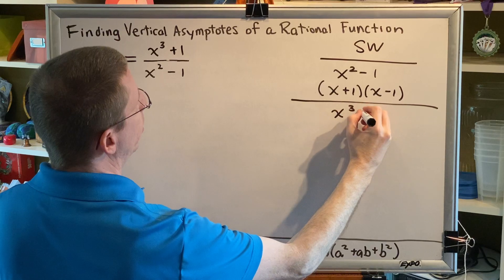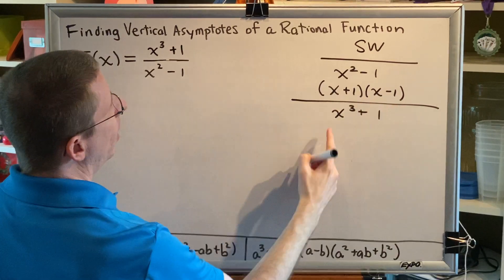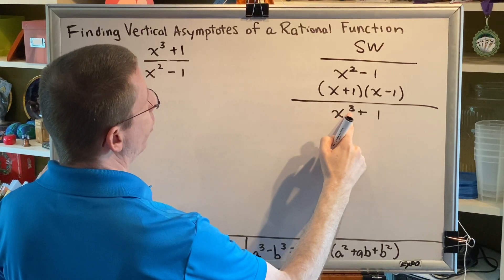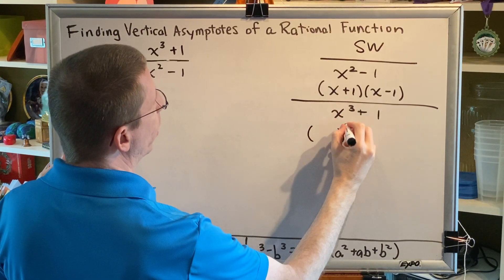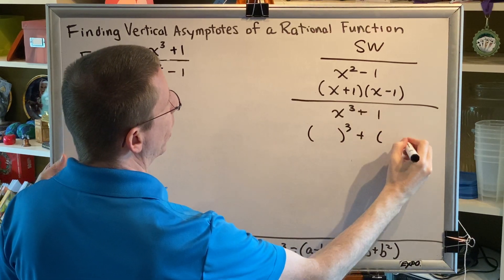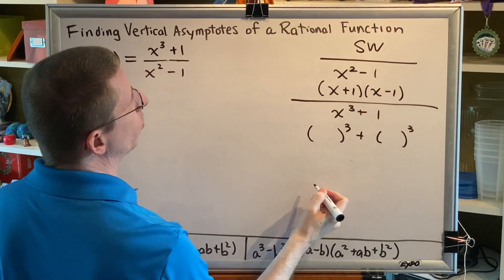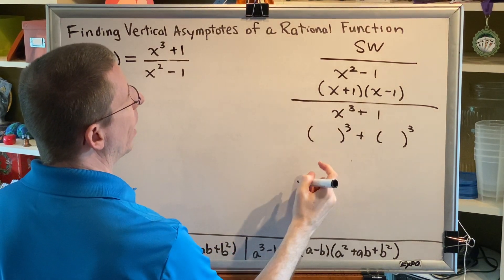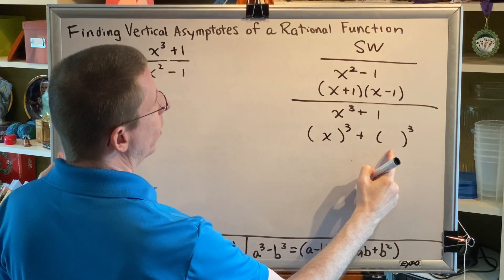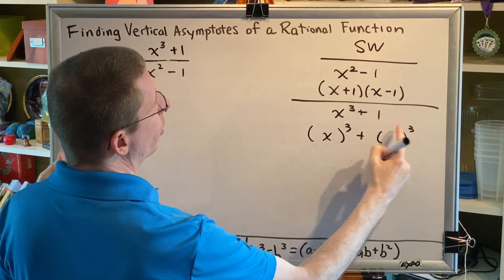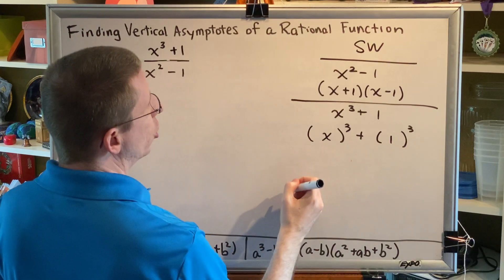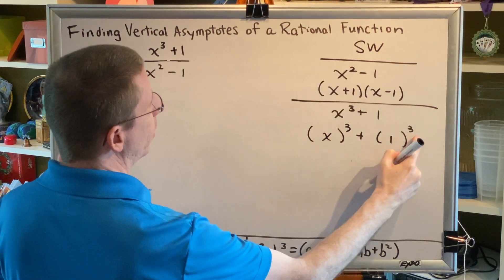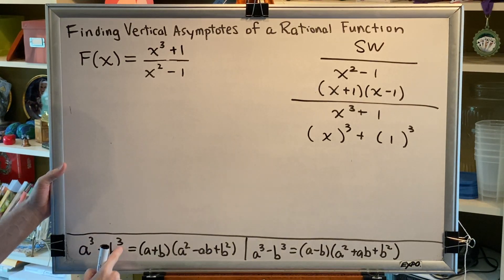Now, let's turn our attention to the numerator. x cubed plus 1. x cubed plus 1 is a sum of cubes. I know that because x to the third power can be rewritten as something cubed, and 1 can be rewritten as something cubed. What has to go in these parentheses so that when you raise it to the third power, you get x cubed? x. What has to go in the parentheses so that when you raise it to the third power, you get 1? 1. So, we can see that this is of the proper form. Something cubed plus something cubed. a cubed plus b cubed.